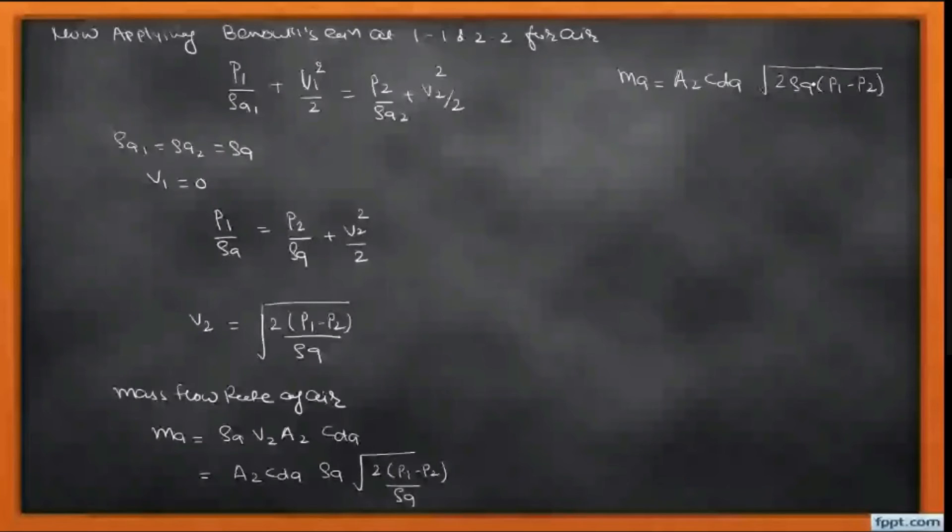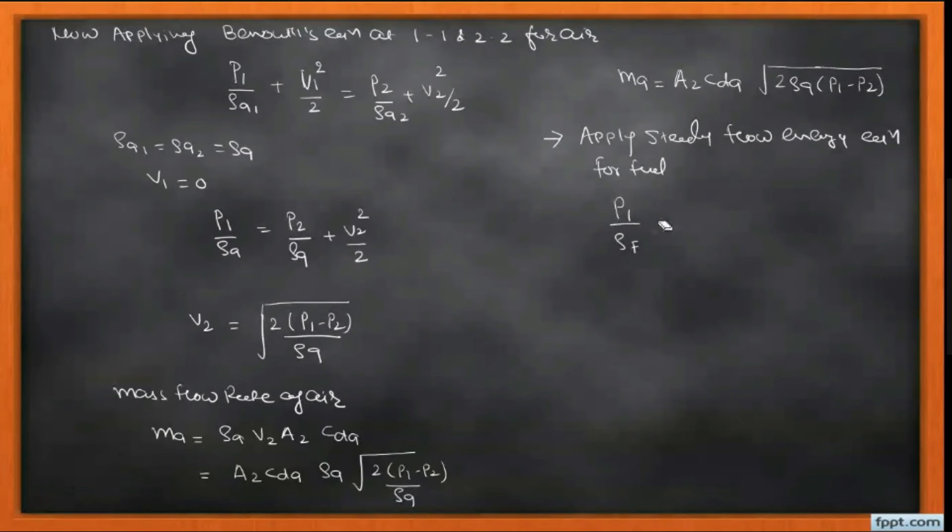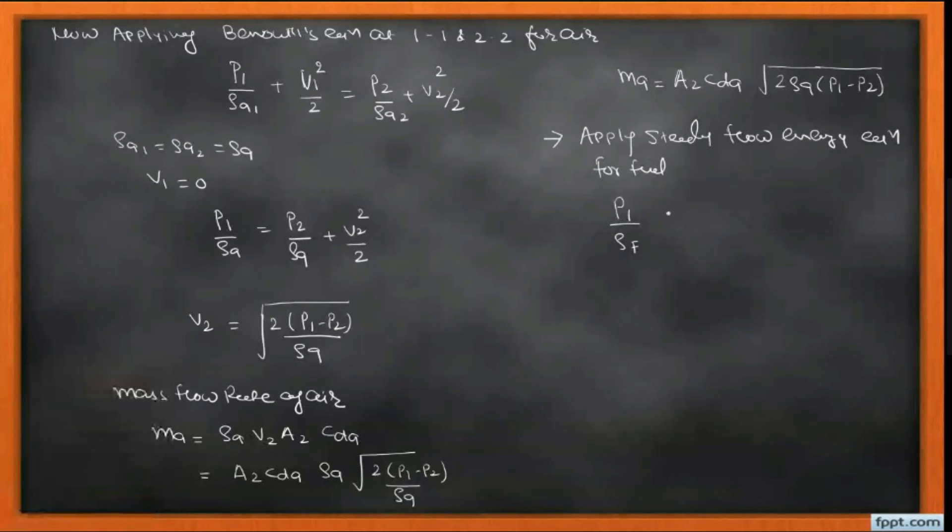Now similarly we apply the Bernoulli equation for fuel. We get P1/ρF equals P2/ρF plus V2²/2 plus—students, we know that there is a height difference between the nozzle and tip, so we consider Z and the gravitational acceleration is associated with that, so Z·g is there.